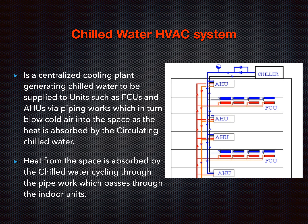In summary, a chilled water HVAC system is a centralized cooling plant generating chilled water to be supplied to units such as FCUs and air handling units through pipework, which in turn blow cold air into the space as heat is absorbed by the circulating chilled water. Heat from the space is absorbed by the chilled water cycling through the pipework, which passes through the indoor units.